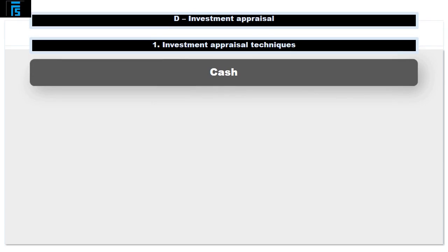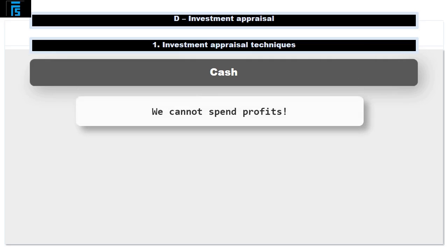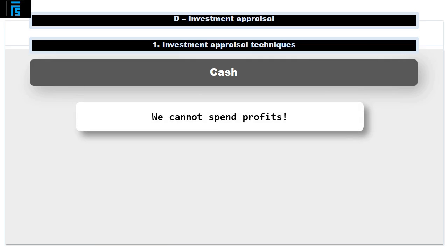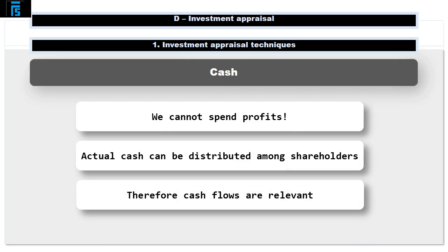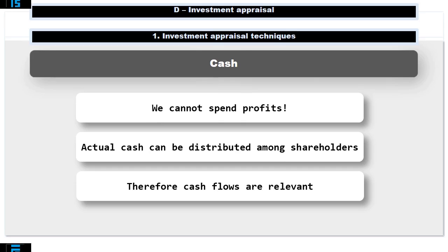Finally, let's consider the significance of the word 'cash.' In short, you can't spend profits. We make shareholders wealthier by giving them cash. So when the company spends cash, it is at that point that it has cost the shareholder, as we can no longer give it to them. Equally, when cash flows into the business, this makes shareholders wealthier. Hence, we focus on cash flows.